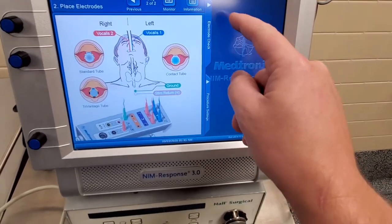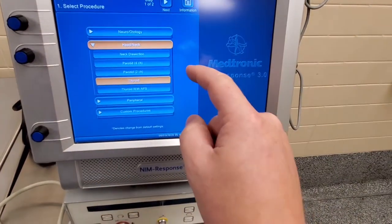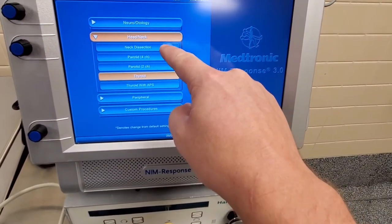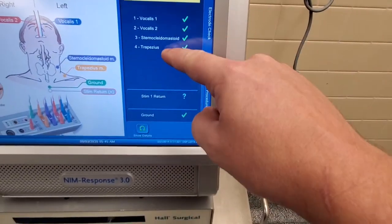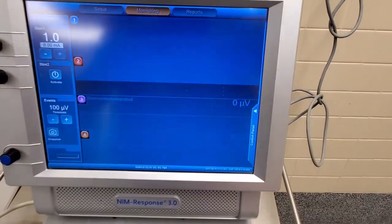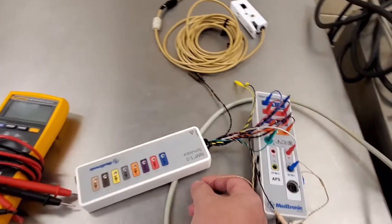You should have two to eight channels depending on the procedure that you have selected. So here you can see the procedures. There's a lot of settings. We don't need to know what they are. We just have to know how to go in. You can see here we have four channels on this procedure.